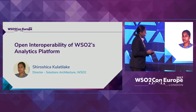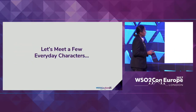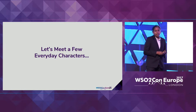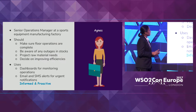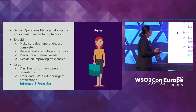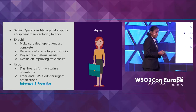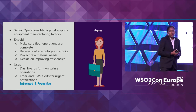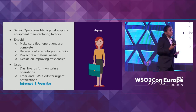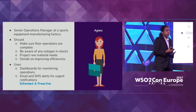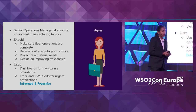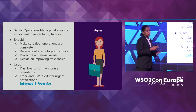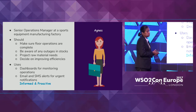Before we go deep into that, I would like to meet a few everyday characters. This is Agnes. She's a senior operations manager at a sports facility equipment manufacturing factory. In her job she needs to be proactive because she's responsible for whatever happens on the factory floor. She needs to be aware of what is happening, proactively take necessary action if things are falling behind, and be alerted on situations she needs to know. Essentially she needs to be informed.